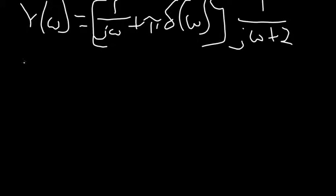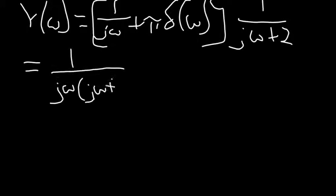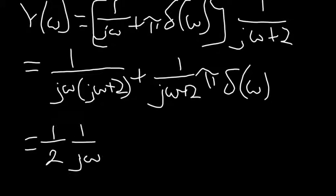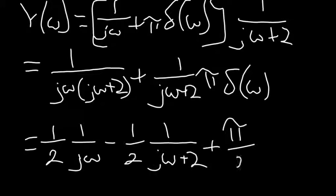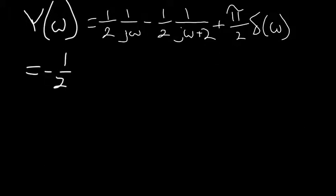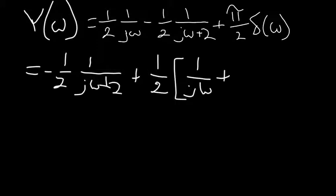Continuing with simplifying Y(omega), we get 1 divided by j omega times the quantity j omega plus 2, plus 1 over j omega plus 2 times pi times delta(omega), which then, using partial fractions and the property previously given, we end up with minus 1 half times 1 over j omega plus 2, plus 1 half times the quantity 1 over j omega plus pi times delta(omega).